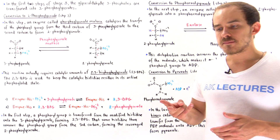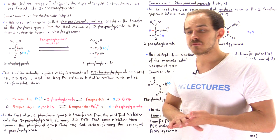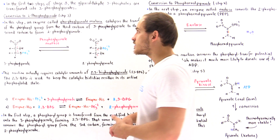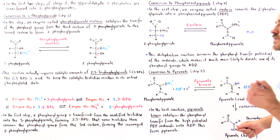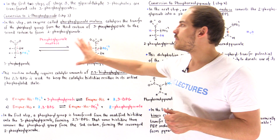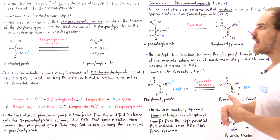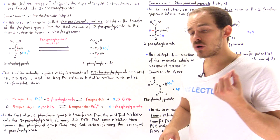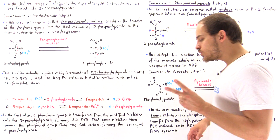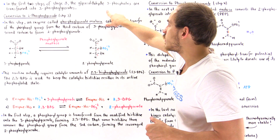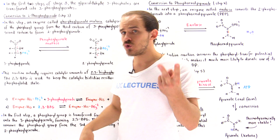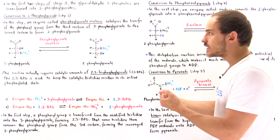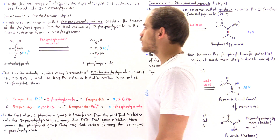Previously, we discussed the first two steps of stage three of the glycolytic pathway. In this lecture, I'd like to finish our discussion on stage three — steps three, four, and five of stage three, which are the same as steps eight, nine, and ten of the overall glycolytic pathway. In steps one and two of stage three, two molecules of glyceraldehyde 3-phosphate are transformed into two molecules of 3-phosphoglycerate, which is the beginning point of step three.